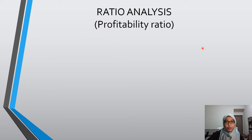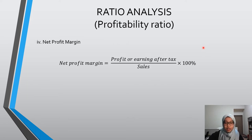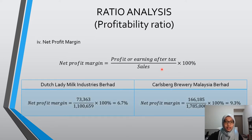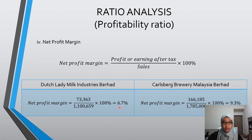The last profitability ratio is Net Profit Margin, which measures the percentage of sales that resulted in net profit. Dutch Lady's net profit margin is 6.7% while Carlsberg's is 9.3%, showing that Carlsberg has more ringgit resulting in net profit compared to Dutch Lady.